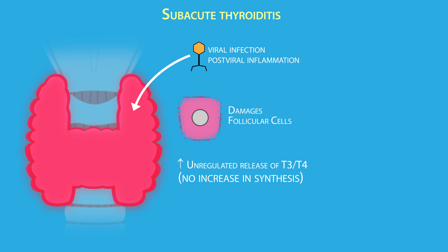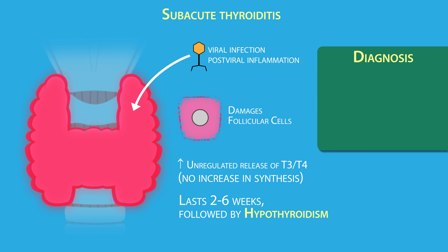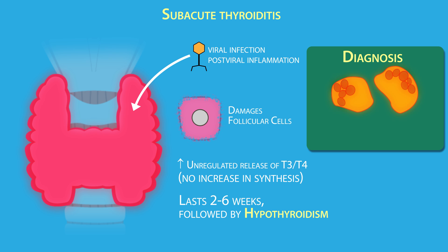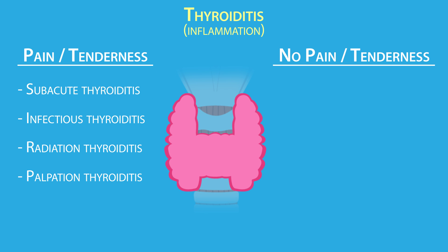Subacute thyroiditis does not lead to an increase in the synthesis of T3 or T4. It is usually temporary, lasting two to six weeks, and is followed by hypothyroidism. Diagnosis can be confirmed by the appearance of multinucleated giant cell granulomas in a thyroid gland biopsy.